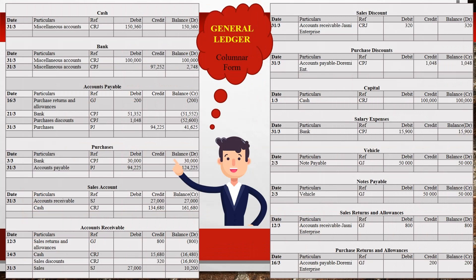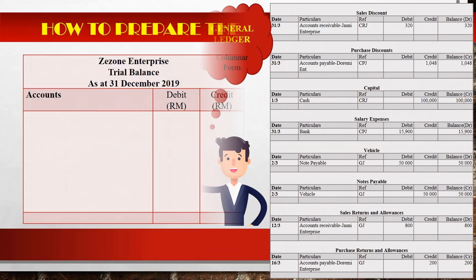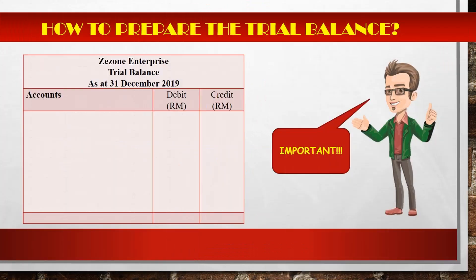These are examples of general ledger in columnar form. We will transfer all amounts of the accounts to trial balance. How to prepare trial balance? Firstly, the most important things are you must write the company name, trial balance statement, and date — whether month ended or year ended, depending on the question.